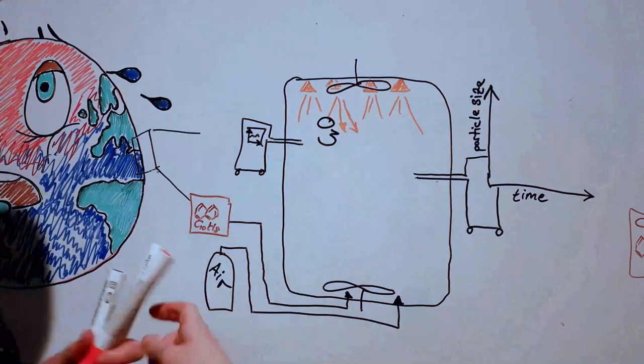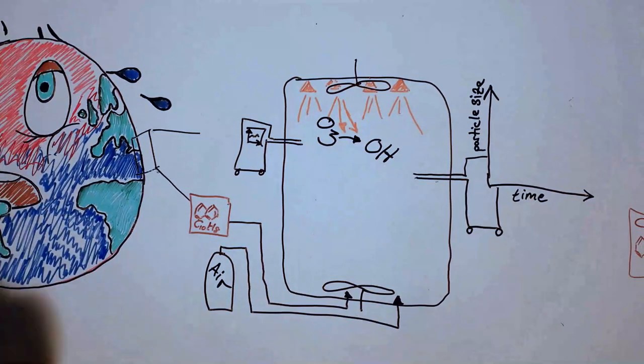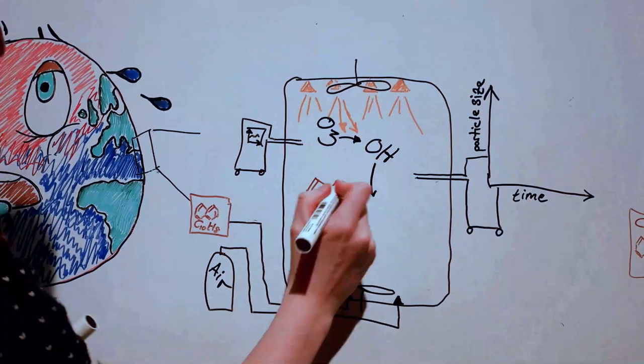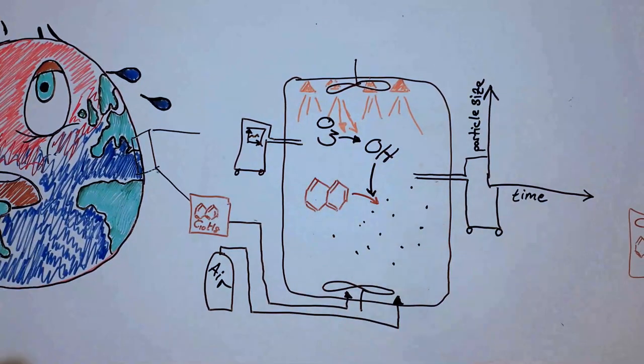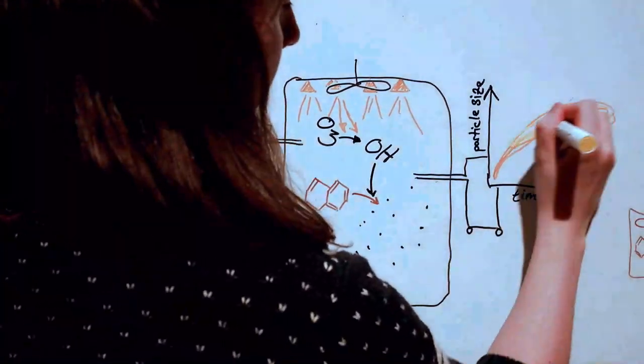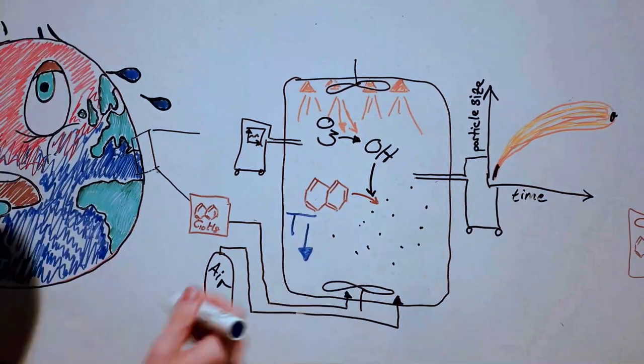After turning on ultraviolet lights in the chamber to simulate sunlight, reactions occur between the gases, and they start to form molecules that can cluster together to form particles. The particles grow in size over time, and the way we plot them, the data takes the shape of a banana.